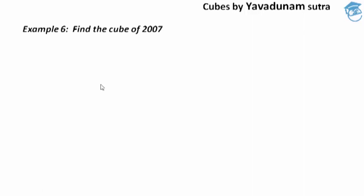Friends, in order to find the cube of 2007, we have some parts of procedures that we have to follow. The first part of procedure is the left part. In the left part, the first step is we have to find the base of the given number 2007. The nearest base of 2007 is 2000.